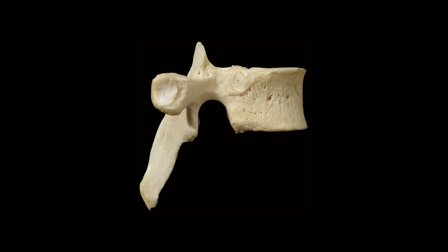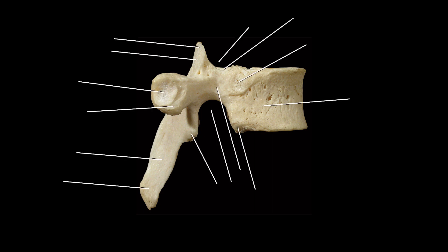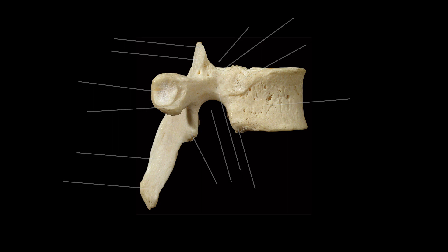This has been a quick review of the prominent bony landmarks of a thoracic vertebra with a right lateral view of T5. Now that we have reviewed all of the prominent bony landmarks here, let's quiz ourselves. Pause the screen for a moment and see how many of the landmarks you can name.